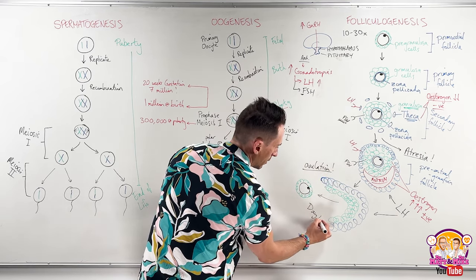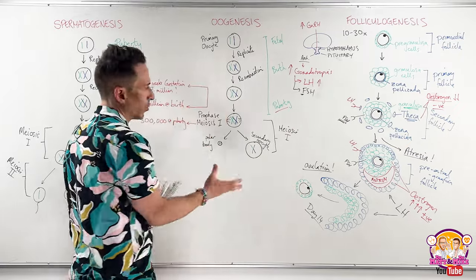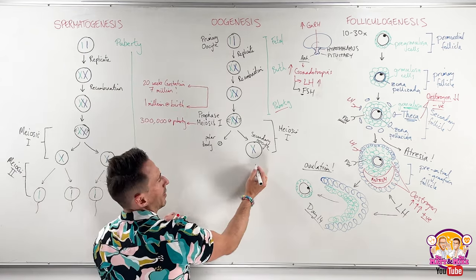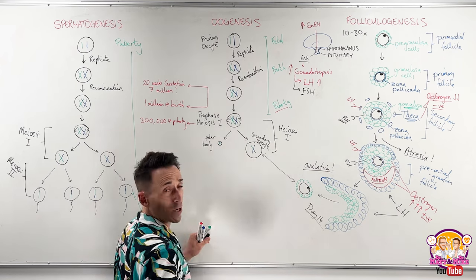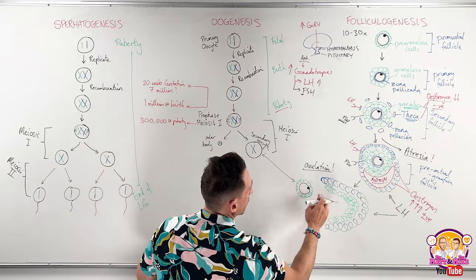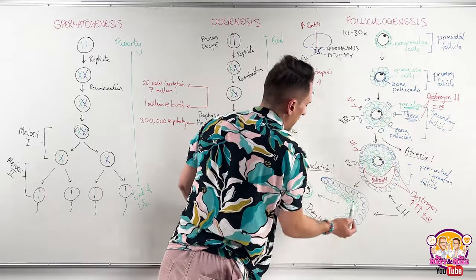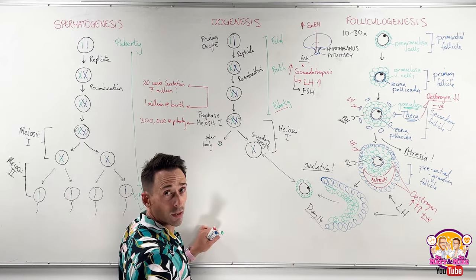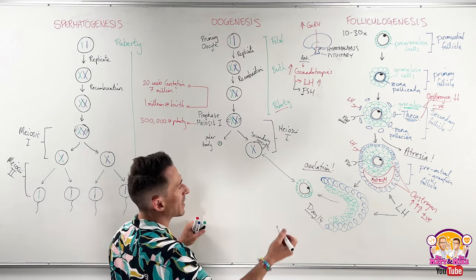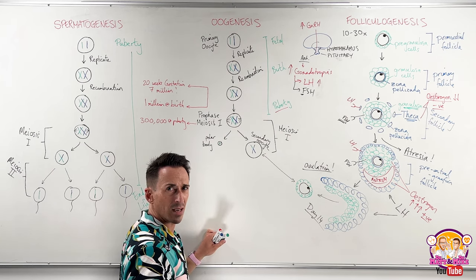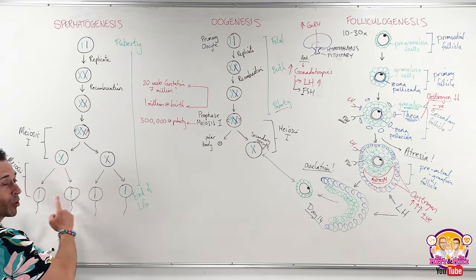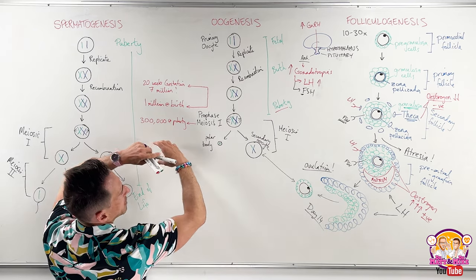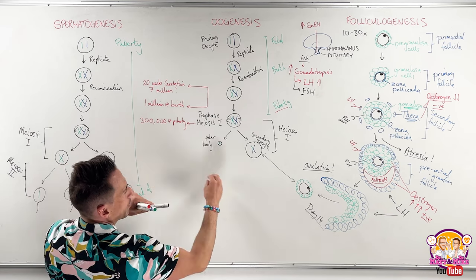This oocyte that gets ovulated is the secondary oocyte — it was a primary oocyte up until around puberty when meiosis I completed. Once ovulation has occurred, the secondary oocyte starts the second phase of meiosis but freezes again and waits. It's ovulated into the fimbria of the uterine tube and moves down into the ampulla, where it waits for sperm to come up and fertilize it.